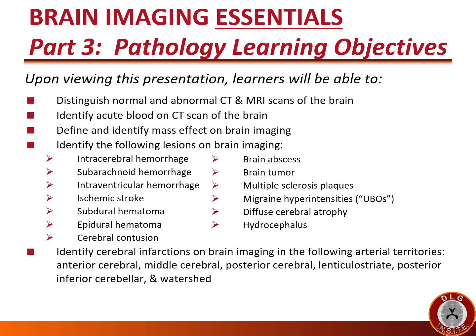The learning objectives for Brain Imaging Essentials Part 3 Pathology are: upon viewing this presentation, learners will be able to distinguish normal and abnormal CT and MRI scans of the brain, identify acute blood on CT scan, define and identify mass effect on brain imaging, identify the listed lesions on brain imaging, and identify cerebral infarctions in the following arterial territories: anterior cerebral, middle cerebral, posterior cerebral, the lenticulostriate, posterior inferior cerebellar, and watershed.